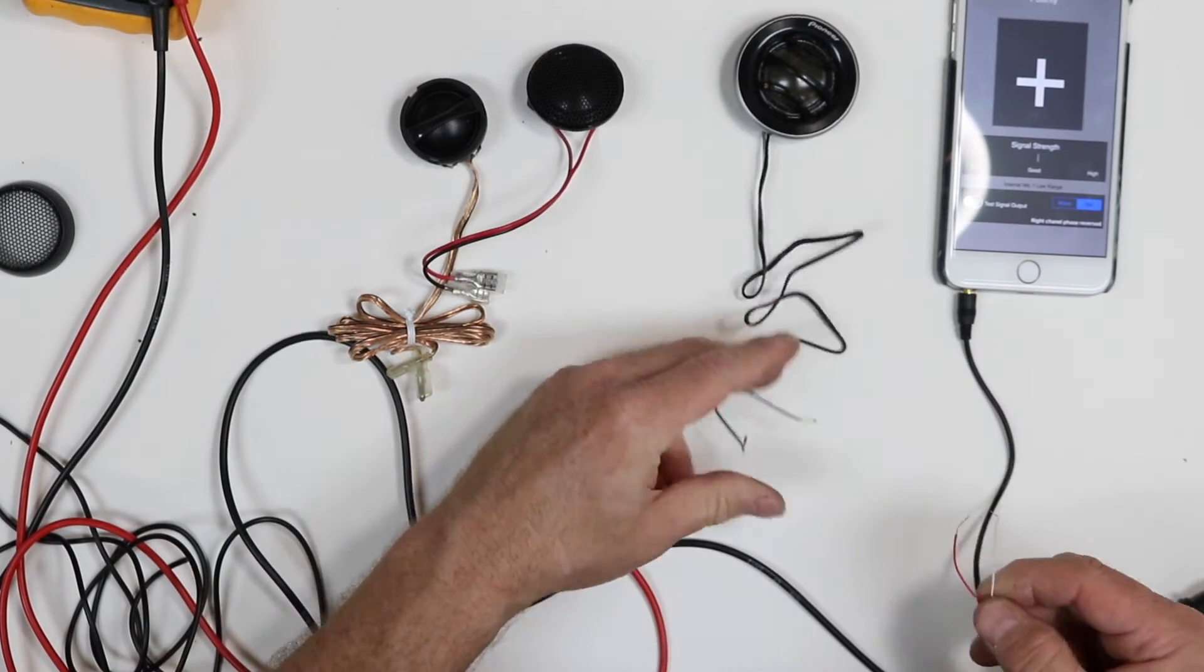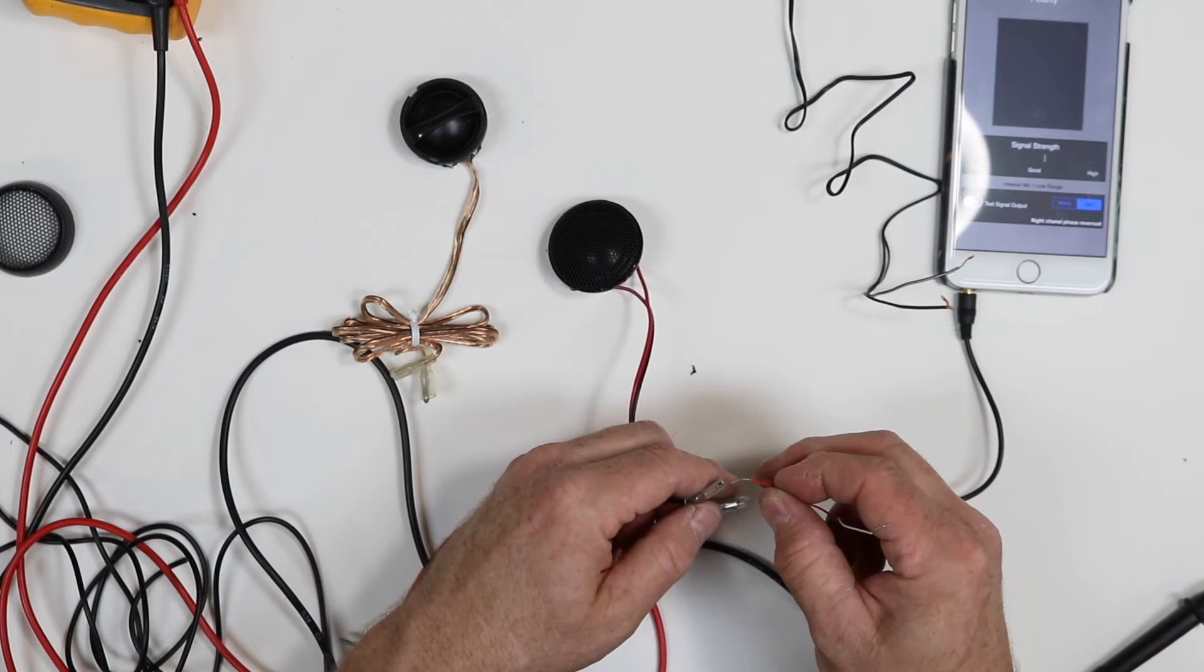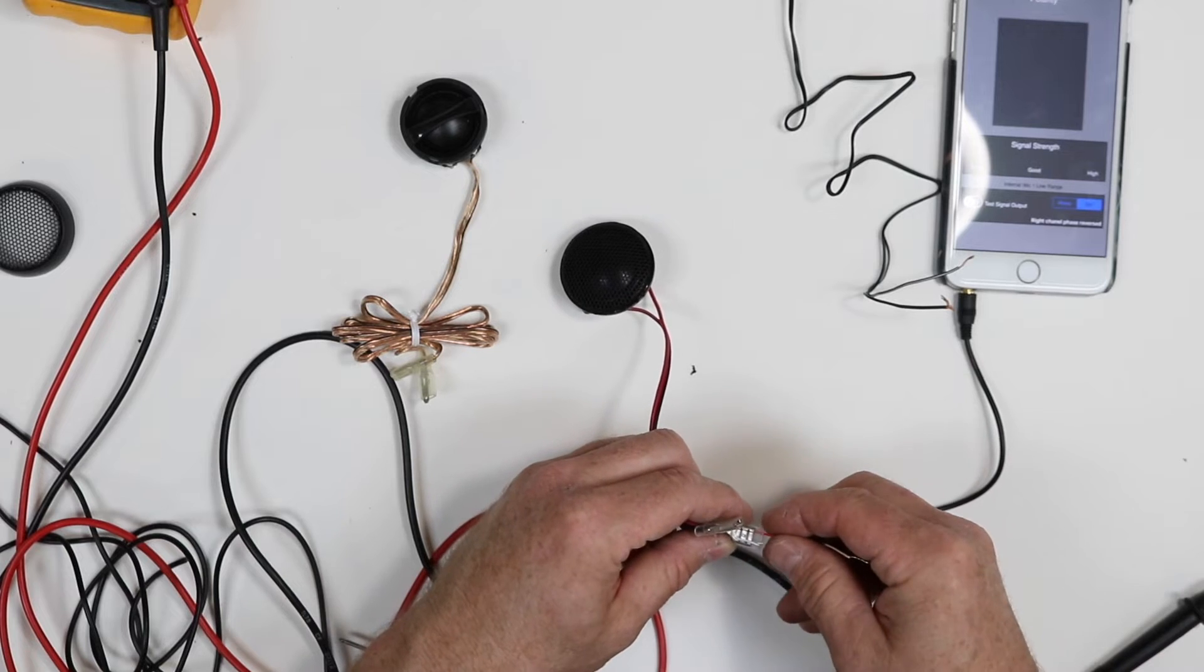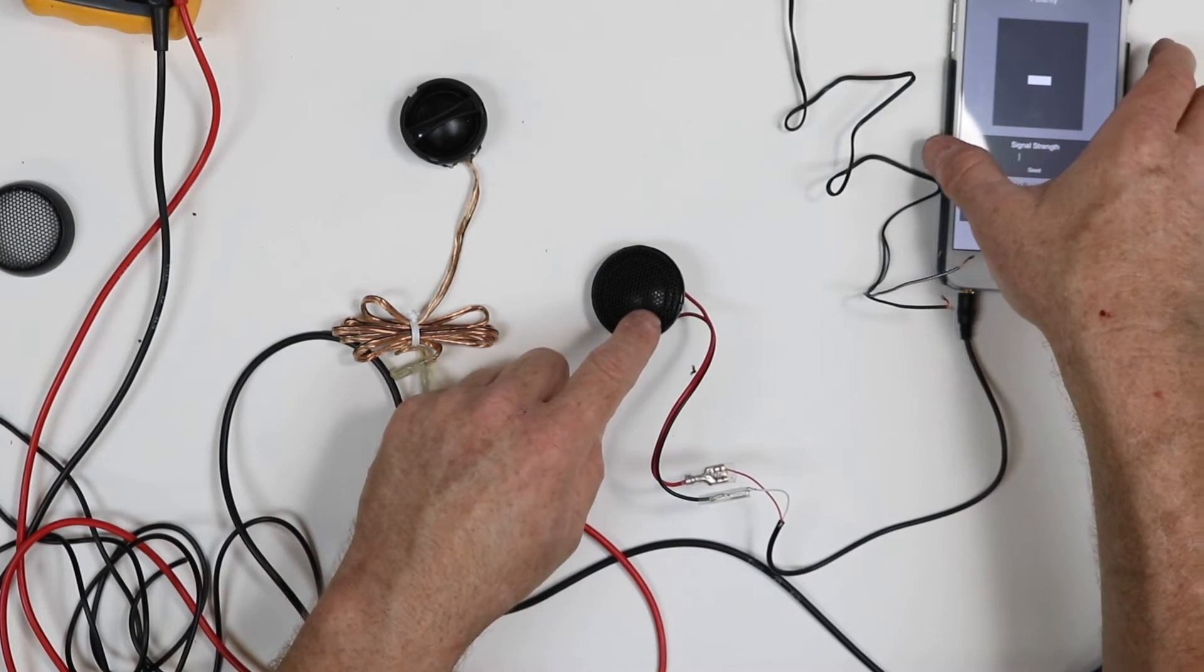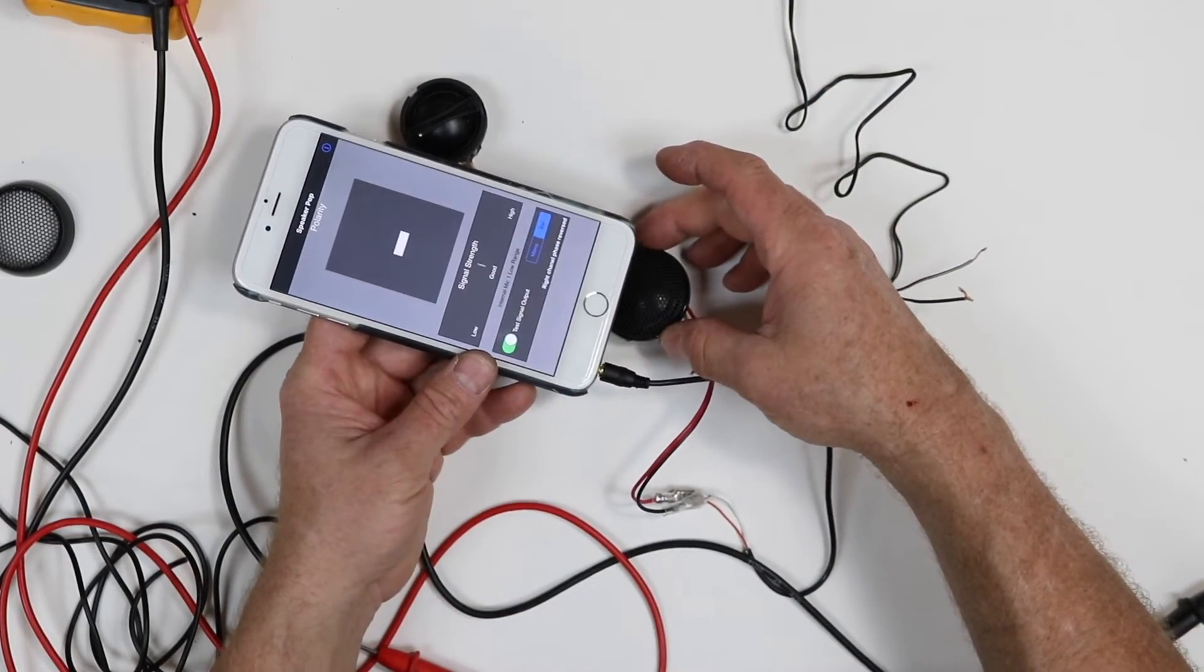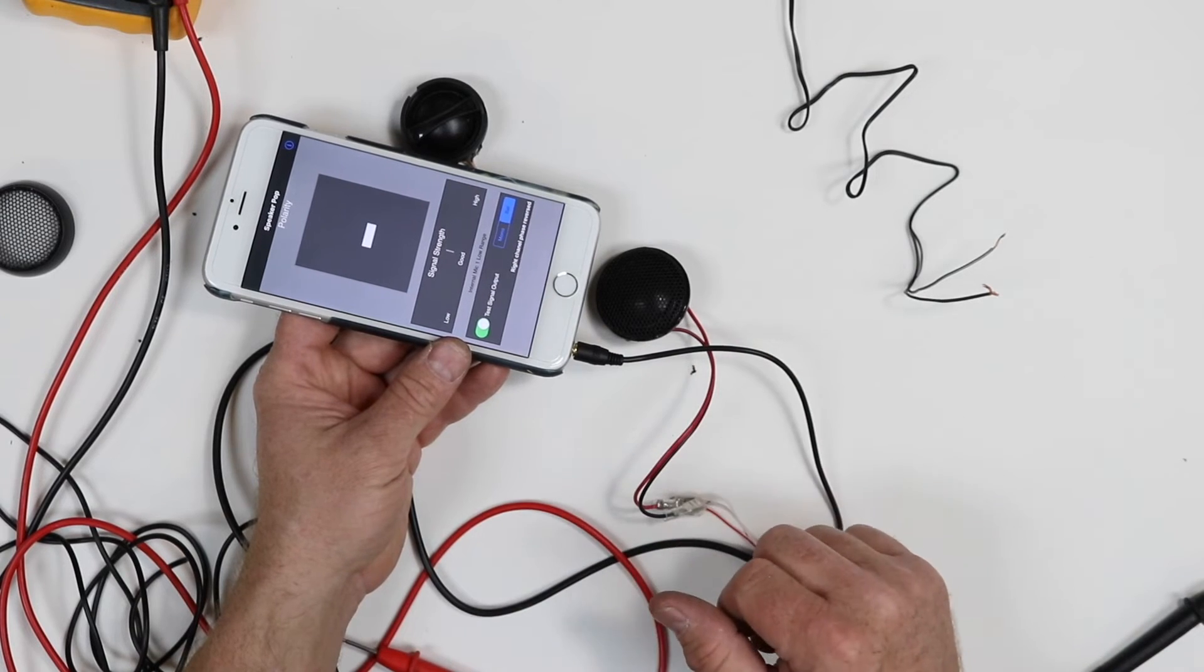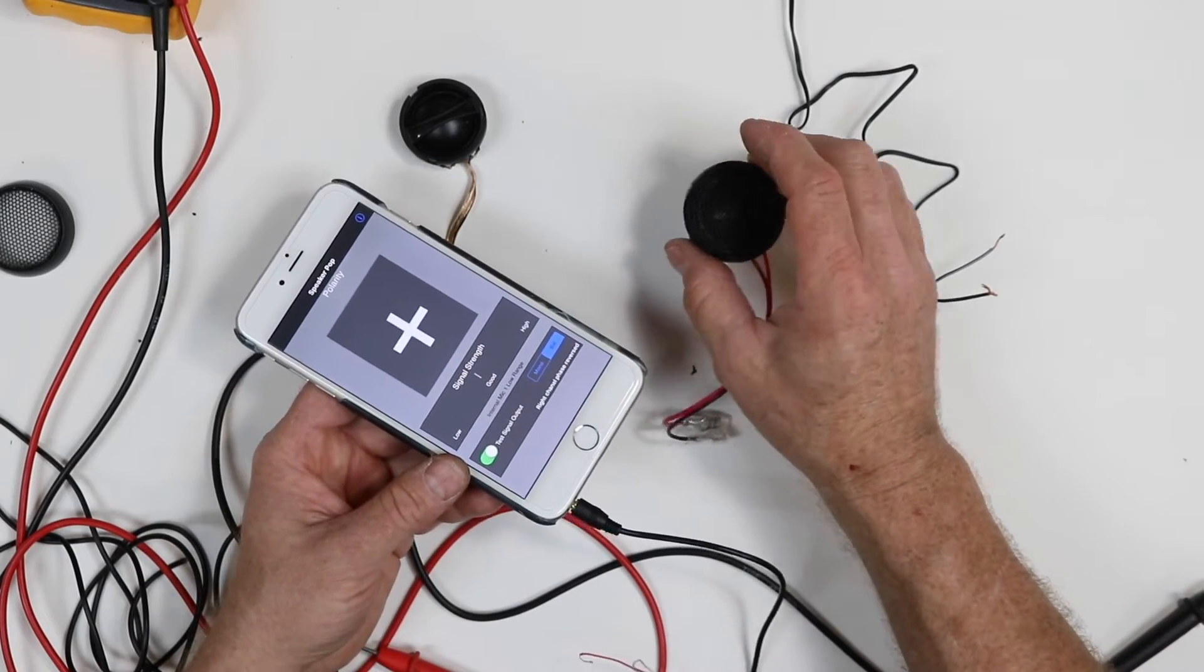Let's move on to the Rockford tweeter. Let's go ahead and hook it up backwards just to see what it does. Turn it on. We got our tick. So sure enough, it's given us a negative, so we know we've hooked this one up backwards. Okay, so we know if we hook it up backwards, it's going to read backwards.